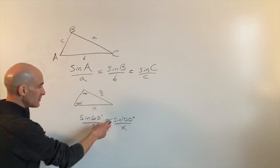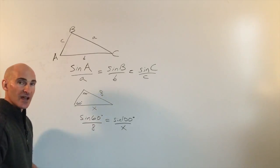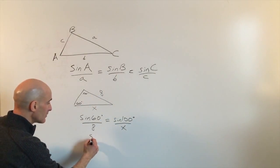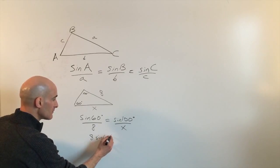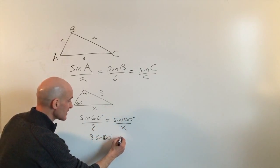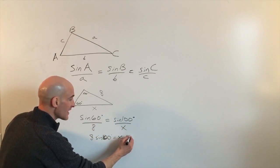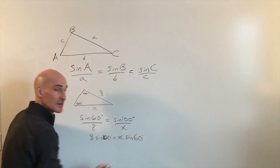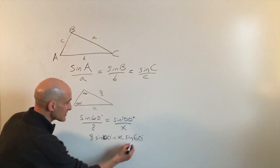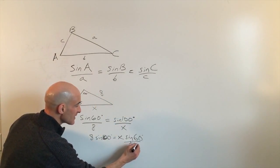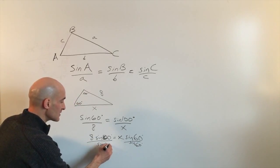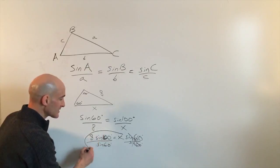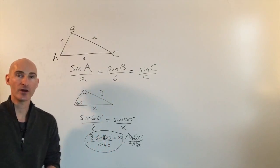We're going to cross multiply across the equal sign. Multiplying the diagonal, we get 8 times sine of 100 equals x times sine of 60. Then all we have to do is divide both sides by sine of 60 — those cancel — and x equals that quantity.